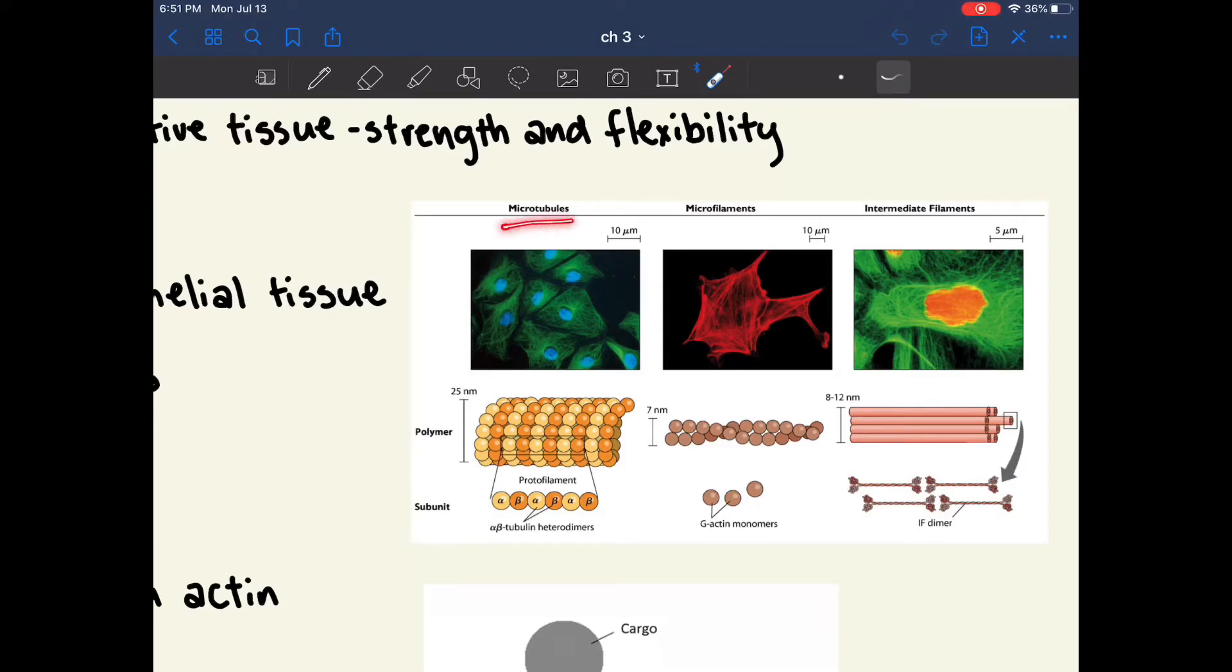So microtubules are made out of repeating subunits of tubulin, microfilaments are made up of repeating subunits of actin, and intermediate filaments are made up of repeating subunits of usually keratin, but sometimes other proteins as well. So these repeating subunits are called motifs, and an important property of tubulin and actin is that they have a negative and positive end, so motor proteins can travel on them with directionality.